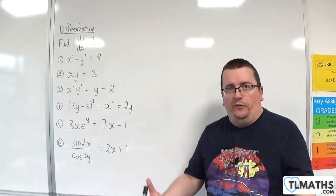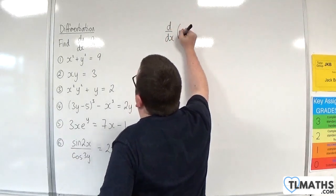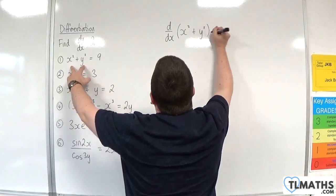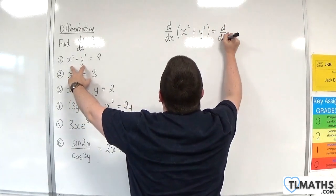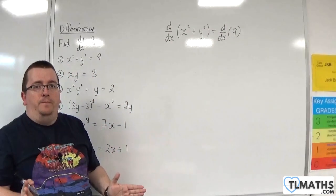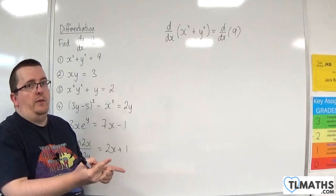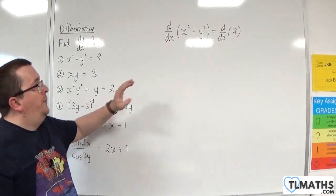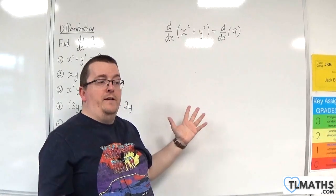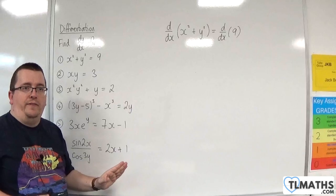When I do implicit differentiation, I make sure that I write down d by dx of both sides first. So d by dx of x squared plus y squared equals d by dx of 9. The main reason for writing that down is it reminds me that I need to differentiate both sides of the equation. Quite often people don't differentiate the right-hand side and leave it as 9 — that's a common error and it will mess up everything thereafter.